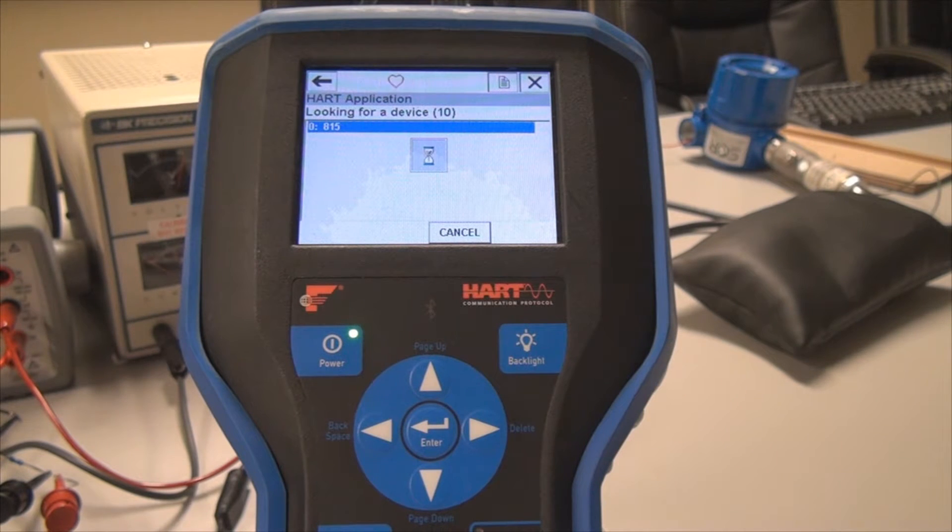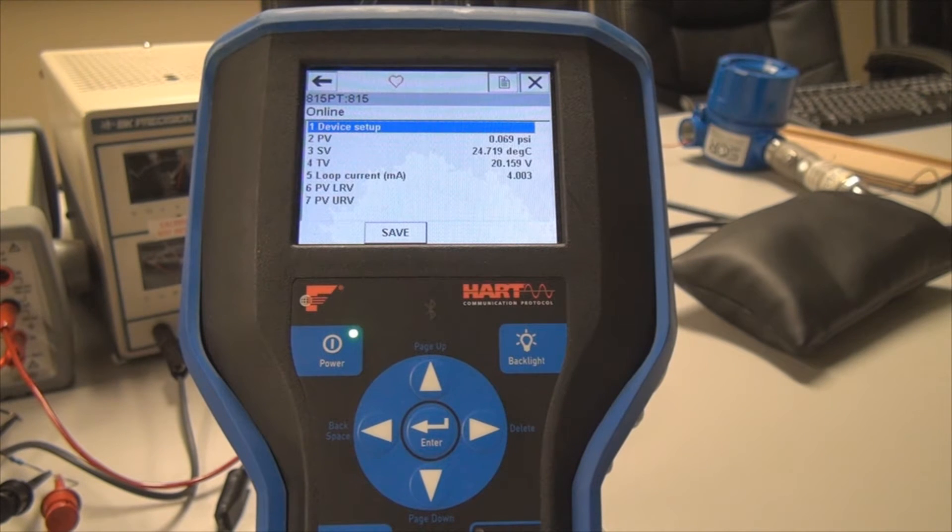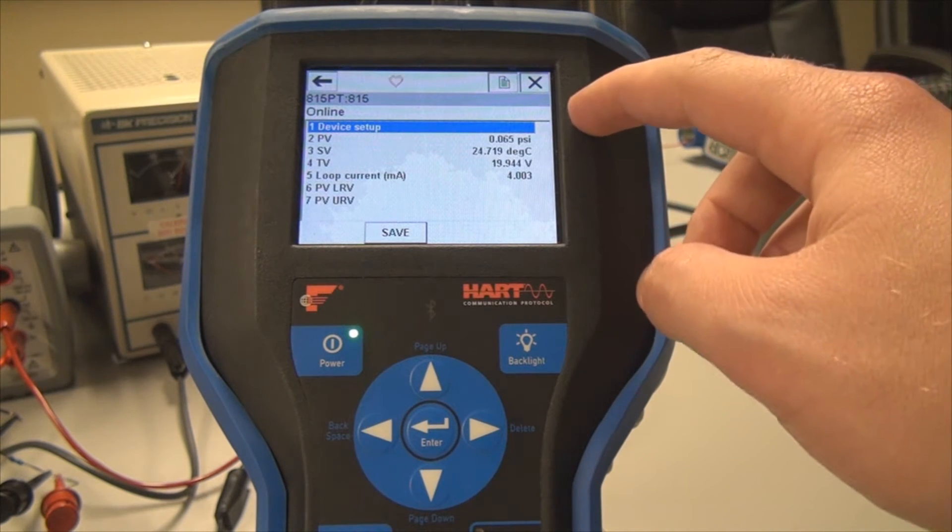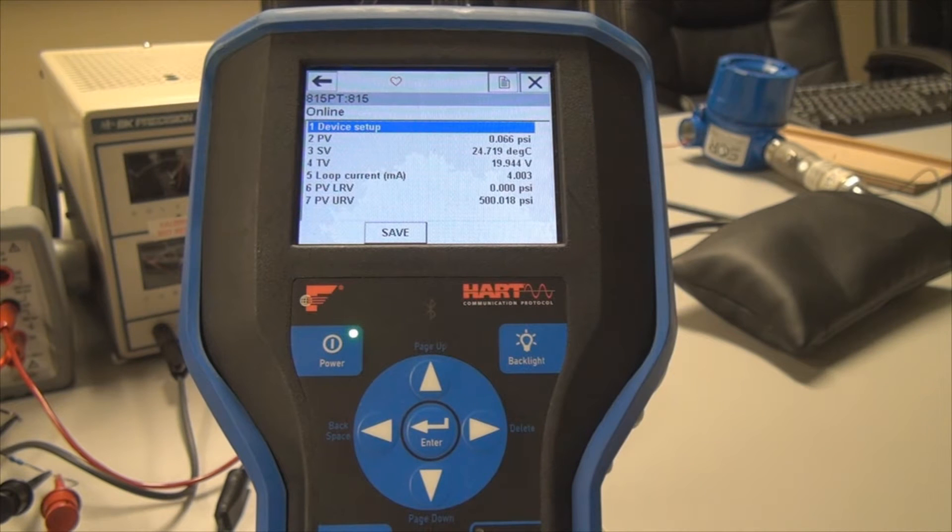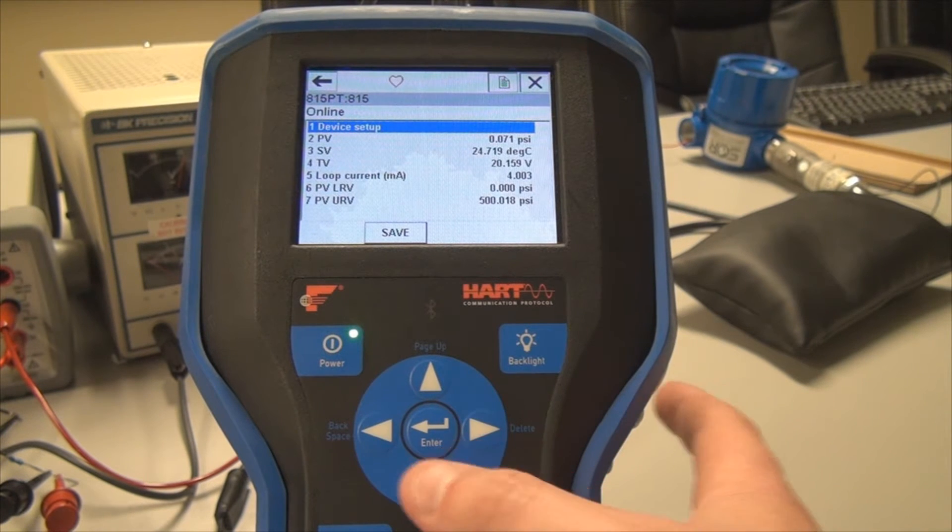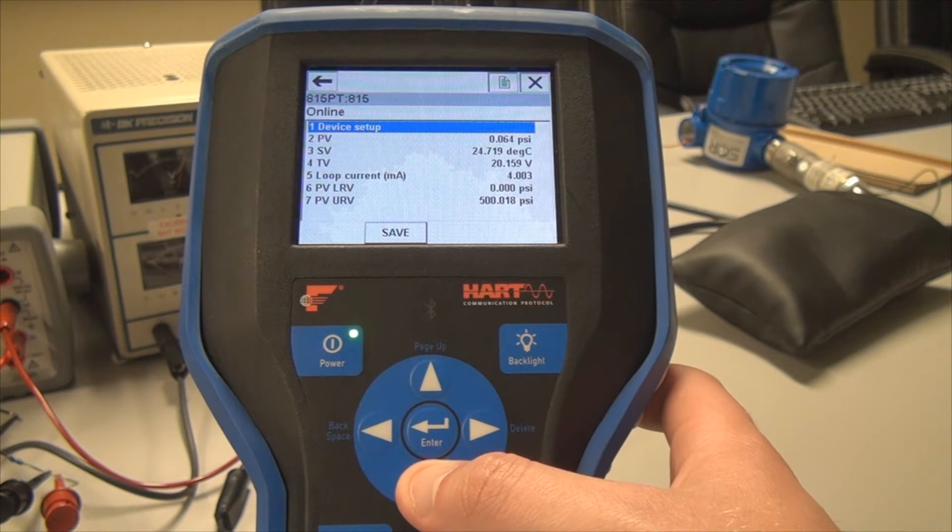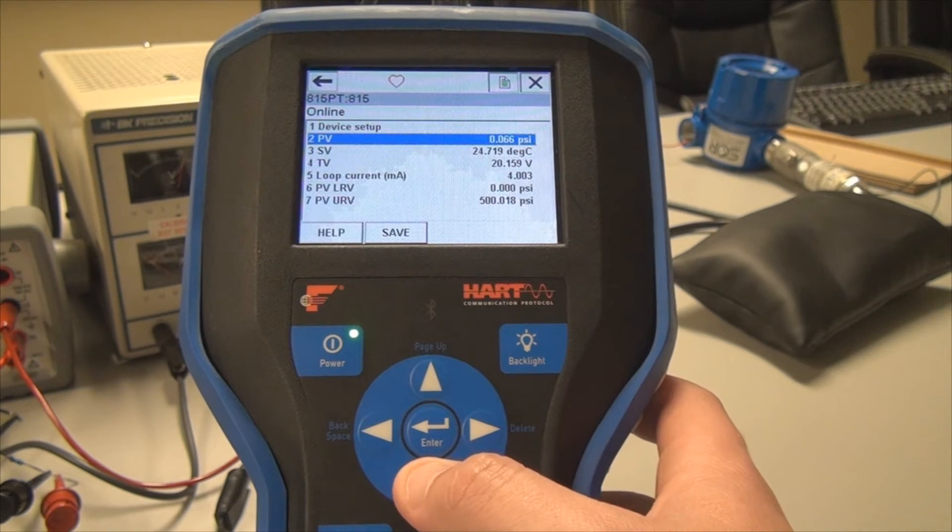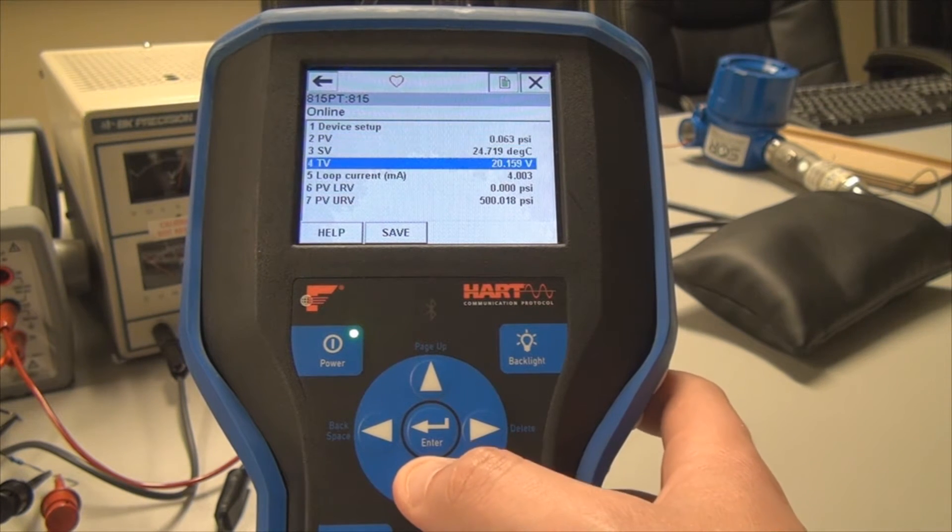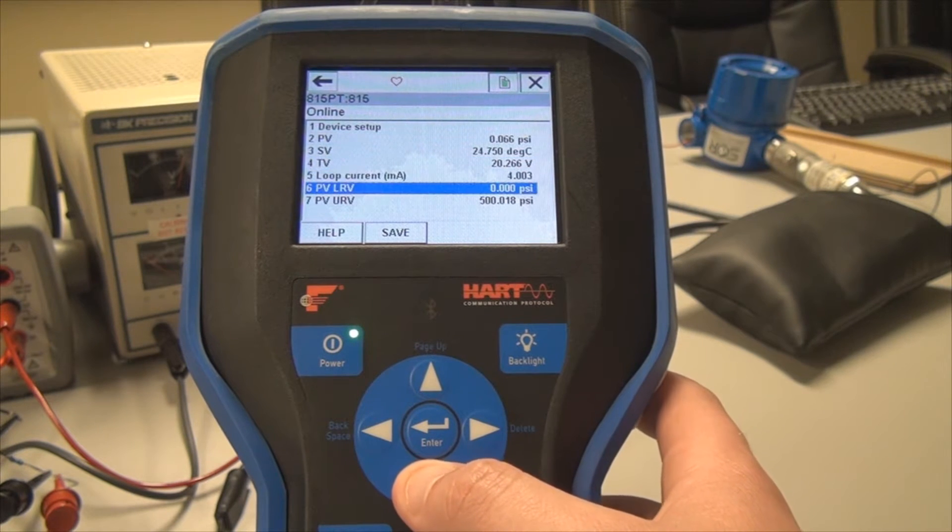And then you'll see all these process variables fill in and come into play here. So this first initial screen is showing you basically your primary, secondary variable, and tertiary variable, while also giving you your upper range, lower range limits, as well as the loop current currently at this pressure.